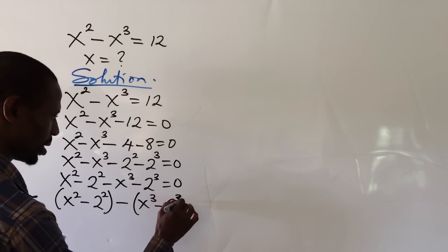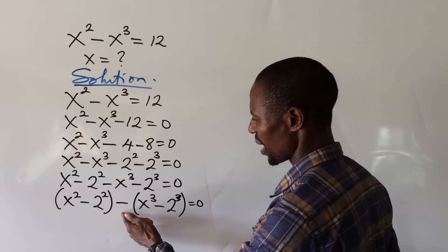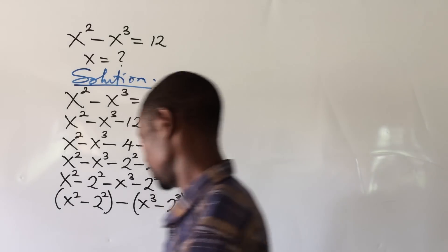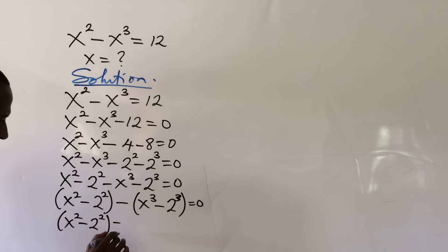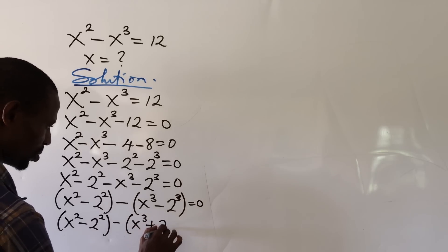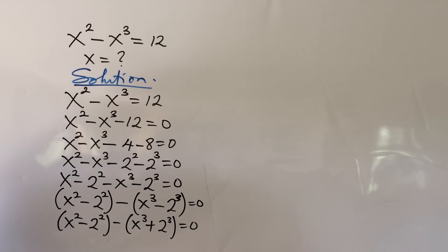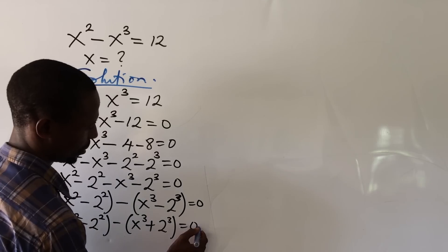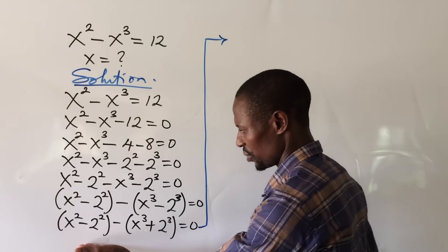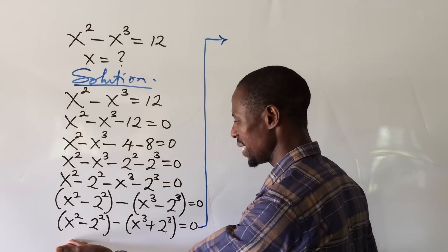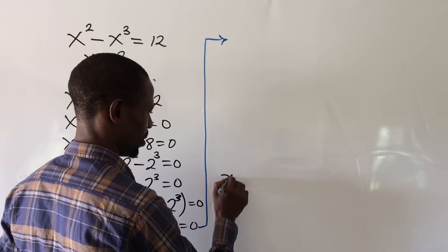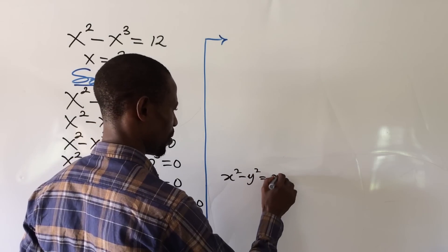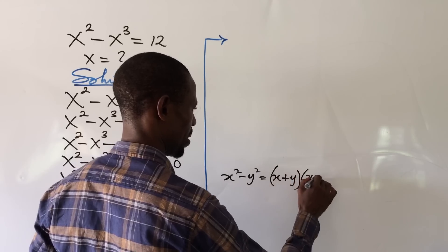Now, we have a minus sign, so we can use this minus to open up that bracket. We get: bracket x squared minus 2 squared, plus bracket minus x cubed plus 2 cubed, close bracket, equal to zero. Now we can see some special algebraic identities playing out. We have x squared minus y squared, and we also have x cubed plus y cubed, where y equals 2.